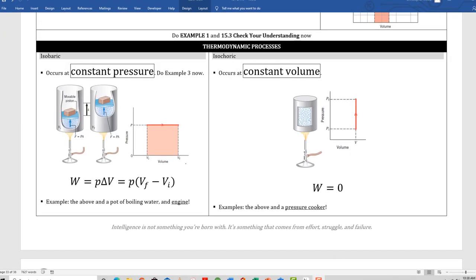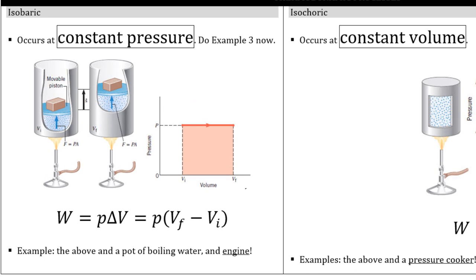Let's run through some basic thermodynamic processes, starting with isobaric. Iso means same or unchanged; baric refers to pressure, so this is a constant pressure process. I have a cylinder with a movable piston with a load placed on it, and I'm subjecting the system to a heat source causing Q to flow in. Because the piston is allowed to move and is exposed to atmospheric pressure at all times, it will move to maintain constant pressure inside. On the PV diagram, you see a flat line for pressure while volume increases — this rectangular shaded area is the work done. The work done equals pressure times the change in volume: W = P·ΔV.